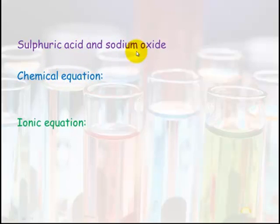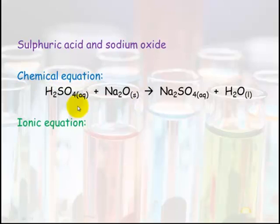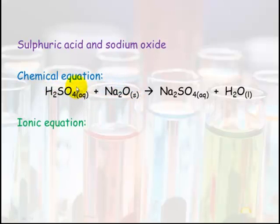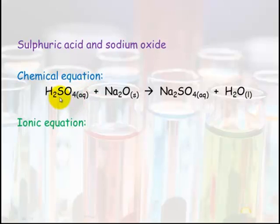Sulfuric acid and sodium oxide. Sodium oxide plus an acid — oxide and acid makes water plus a salt. So sulfuric acid plus sodium oxide will make water — we get the H₂O — and that leaves us with sodium sulfate. Remember valencies, and then balance the whole equation. This is already balanced.